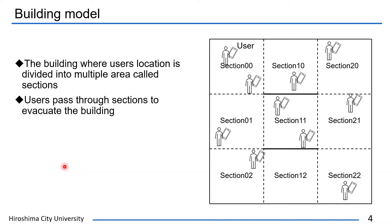I'll explain about the building model in this research. As shown in this figure, this scheme is based on this model. It is assumed that the building is divided into multiple areas called sections. Users pass through sections to evacuate the building. However, in this figure, users cannot pass through sections 10 to 11 and sections 11 to 12.